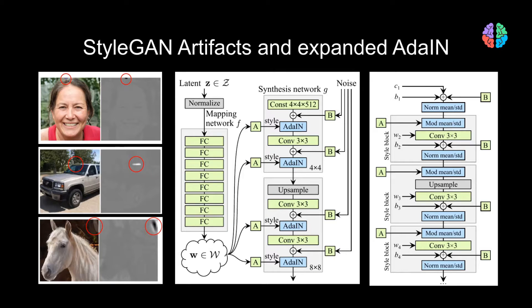Before looking into StyleGAN2 architecture, let's group the architecture of StyleGAN into style blocks with each block receiving only one style vector.